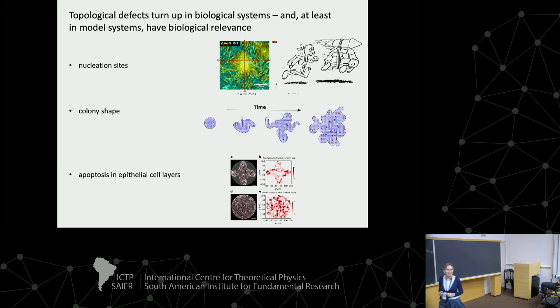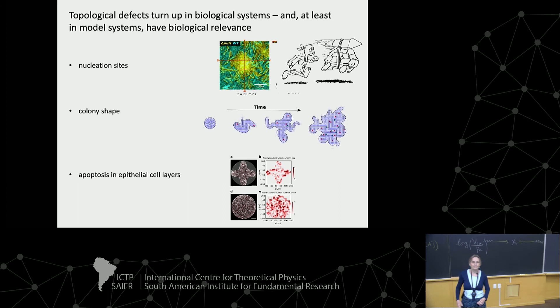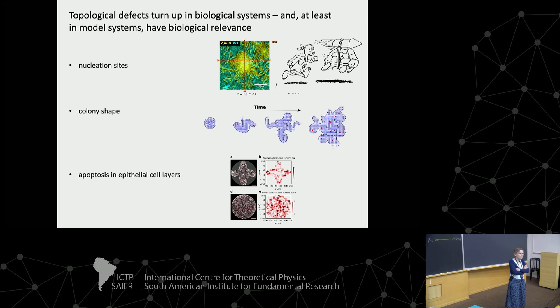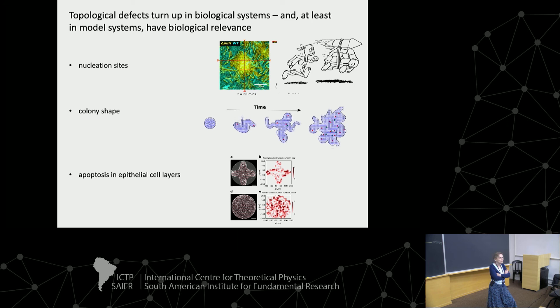Any more questions? The measure of unjamming was the number of cells changing their nearest neighbors — you could also use the diffusion constant of the center of mass. But this is different from density-driven experiments because we don't have cell division here — it's the strength of the forces which drives the transition, not any change in density.